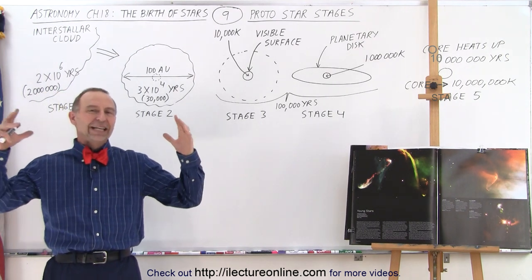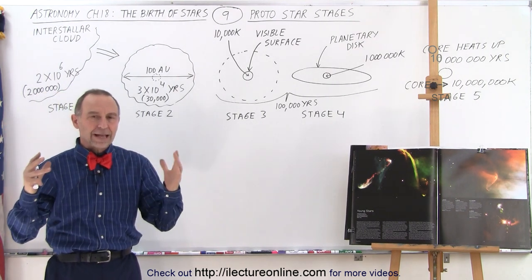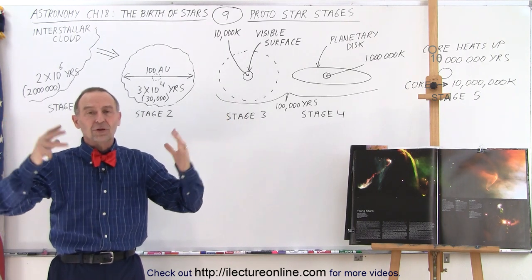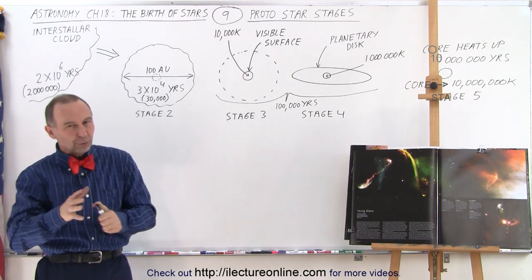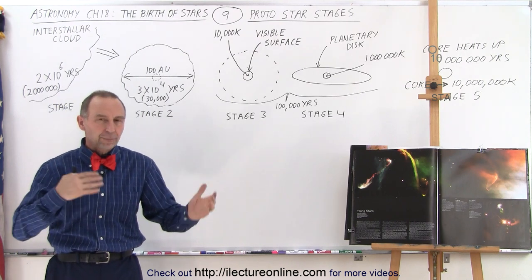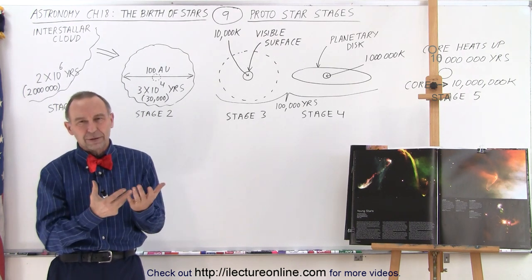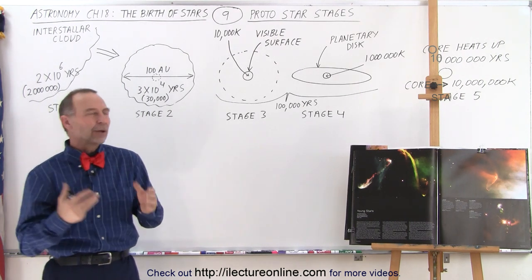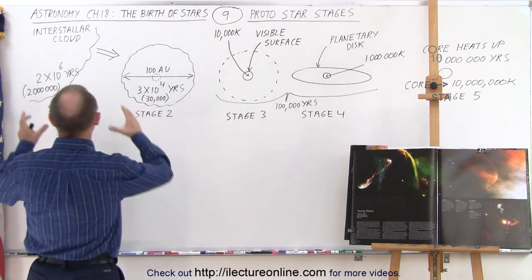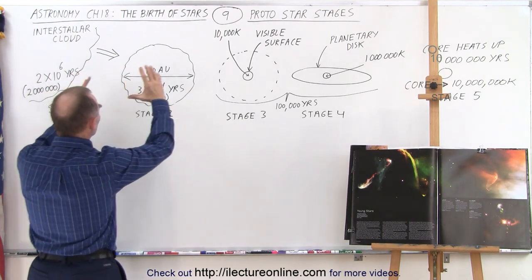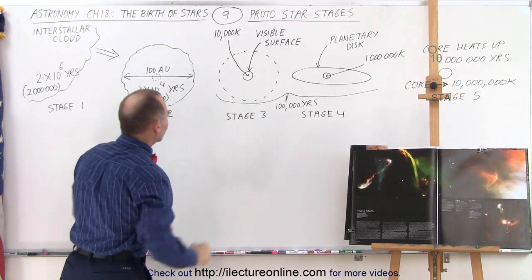Starting with an initial interstellar cloud, interstellar mass that slowly collapses under the force of gravity, usually with a bit of a kickstart. We've seen that under typical circumstances with typical temperatures and densities, it takes about 200,000 years for an interstellar cloud to collapse into something that will eventually turn into a star.